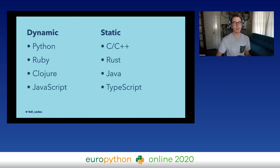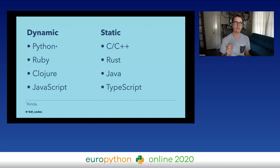We can sort of put languages into two categories — dynamic and statically typed. Python is in the dynamic category, and things like C, Rust, Java, and TypeScript are in the static category. But we have to put a little asterisk here, because Python is kind of an odd duck and we can do static typing with it as well. Technically, Ruby is going to get something very similar to Python at the end of this year.